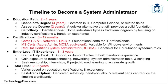Many sys admins begin in IT support, help desk, or junior IT roles before transitioning into a system administrator role, which typically takes about one to three years of experience. Overall, the total time to become a sys admin is about two to six years on average depending on the chosen education and experience path. However, highly motivated individuals with strong self-study skills and relevant certifications can land a sys admin role much faster.